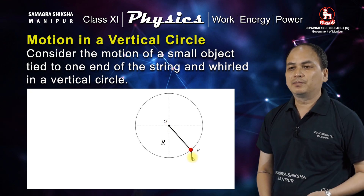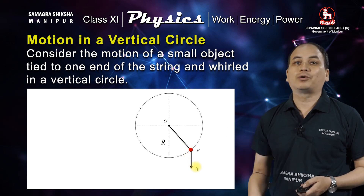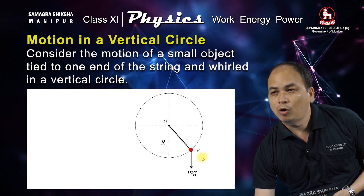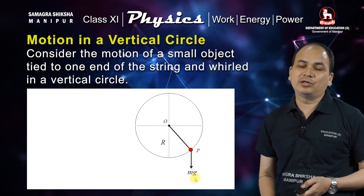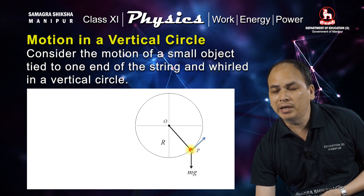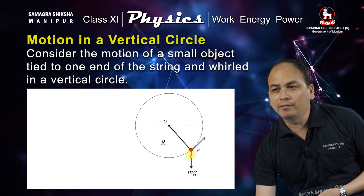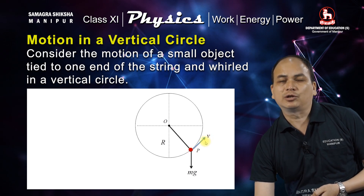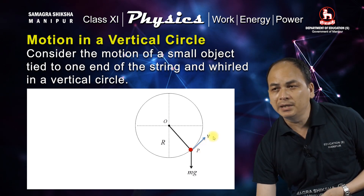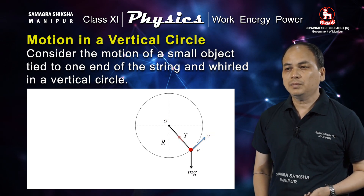The weight of this object will be given by mg, where m is the mass of this object and g is the acceleration due to gravity. The object moves in a counterclockwise direction, and the velocity of this object will be tangential to this point, represented by v.